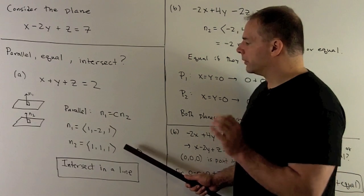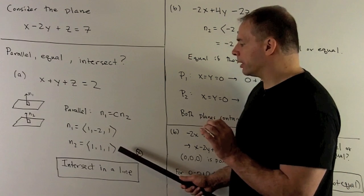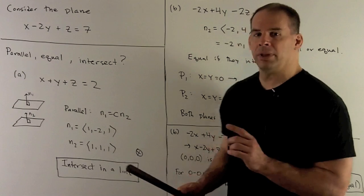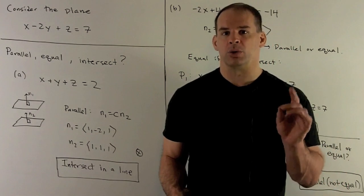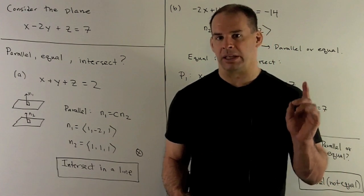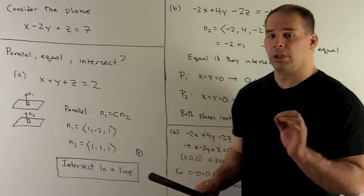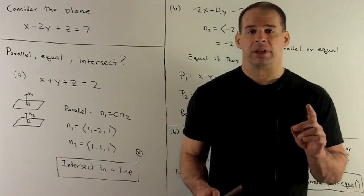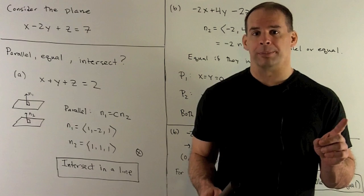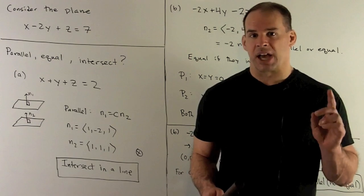Now note, if these were multiples of one another, since we have a 1 in the z coordinate, the multiple would have to be 1, which would mean our normal directions would have to be equal. Since that's not the case, planes are not parallel, they definitely can't be equal then, so that means they're going to have to intersect in a line.